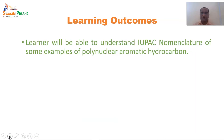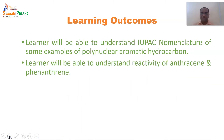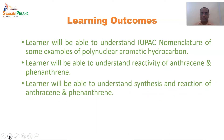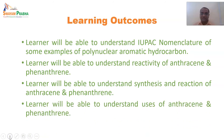Let's see the learning outcomes of this session. The learner will be able to understand IUPAC nomenclature of some examples of polynuclear aromatic hydrocarbons, understand the reactivity of anthracene and phenanthrene, understand synthesis and reactions of anthracene and phenanthrene, and understand the uses of anthracene and phenanthrene. The learning outcomes are similar to the earlier session; only the examples are different.